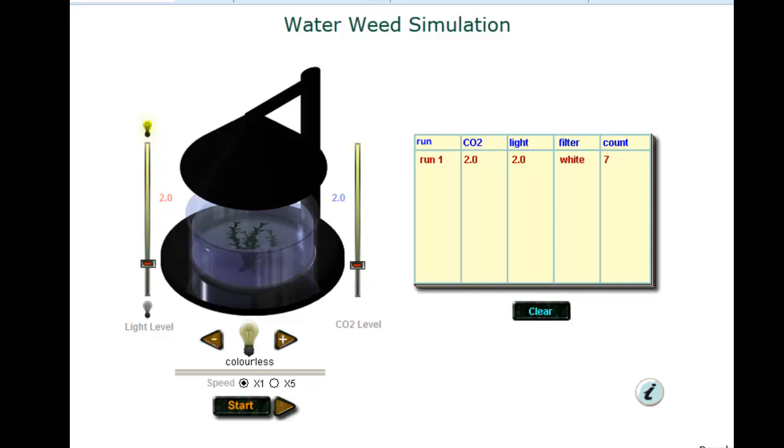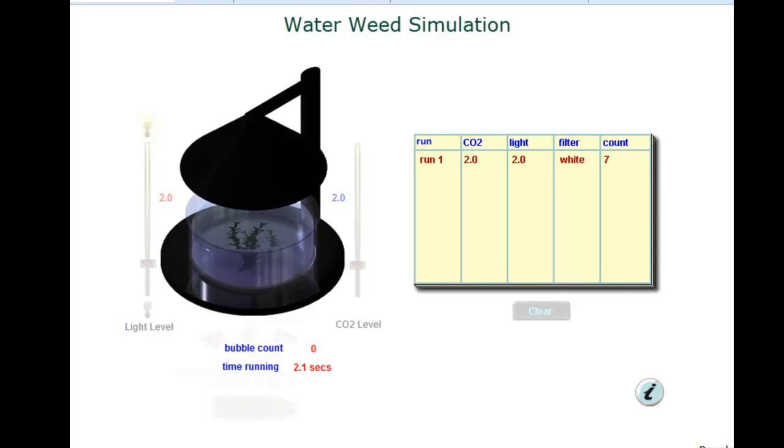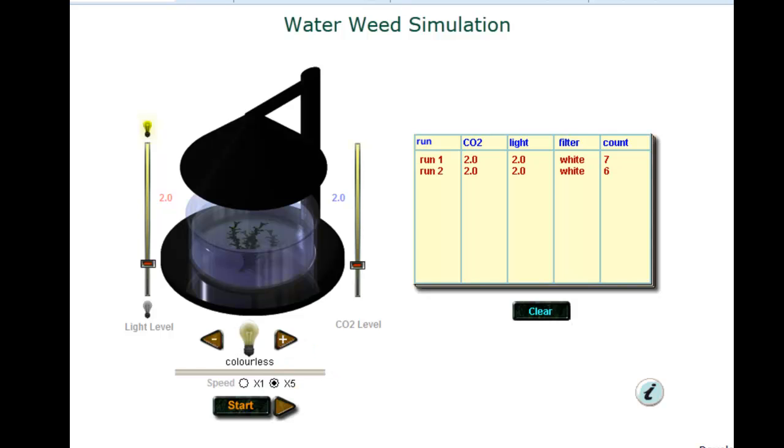You can also adjust it to 5x, where now one second is five seconds of lab time. Same conditions. Let's see if we can get a different set of data. One bubble, two, three. Okay, we've got six bubbles on that one. I mean, you can actually see that this simulation actually adjusts data based on runs. So if you're trying to actually figure it out, same conditions don't always give you the same results, which actually works out really well.